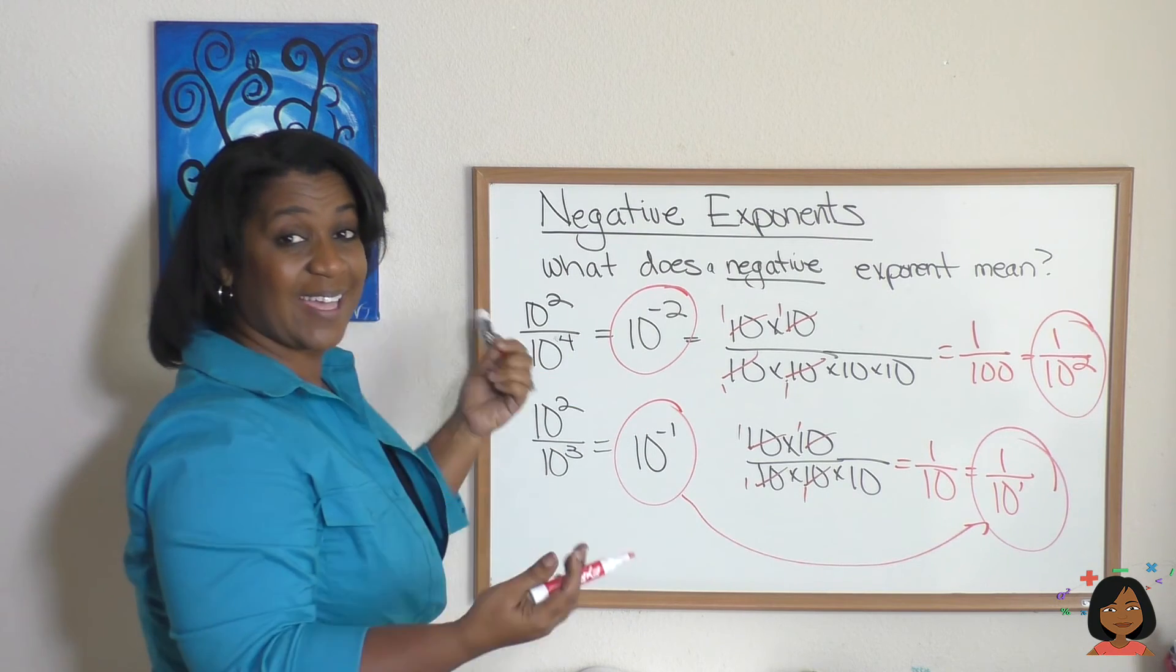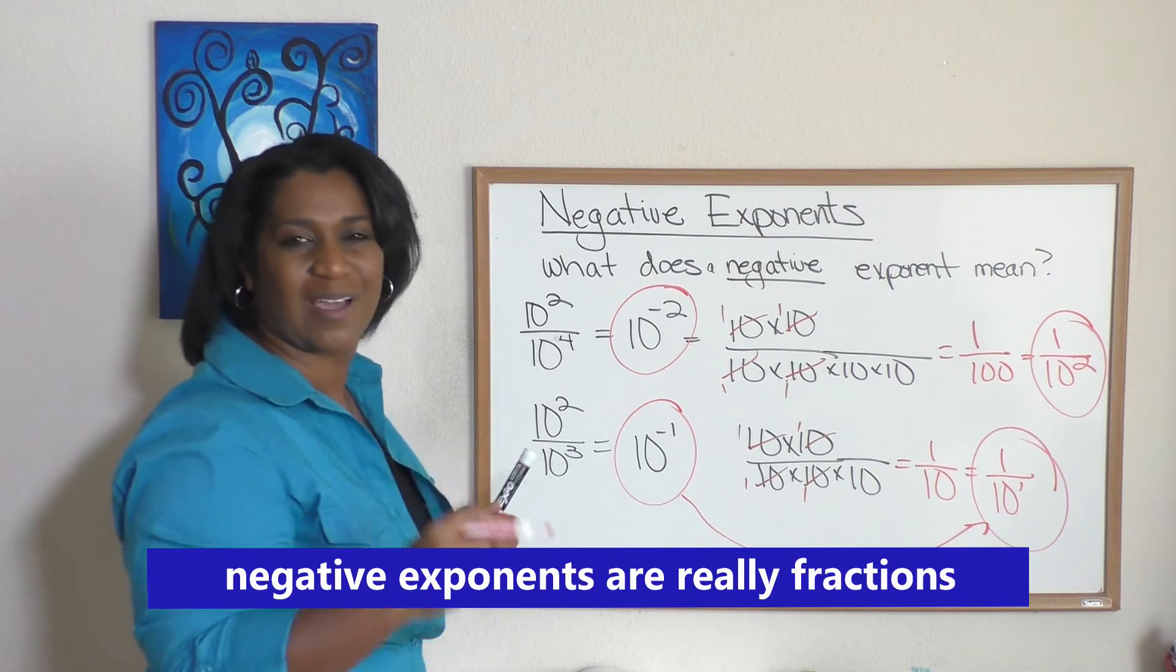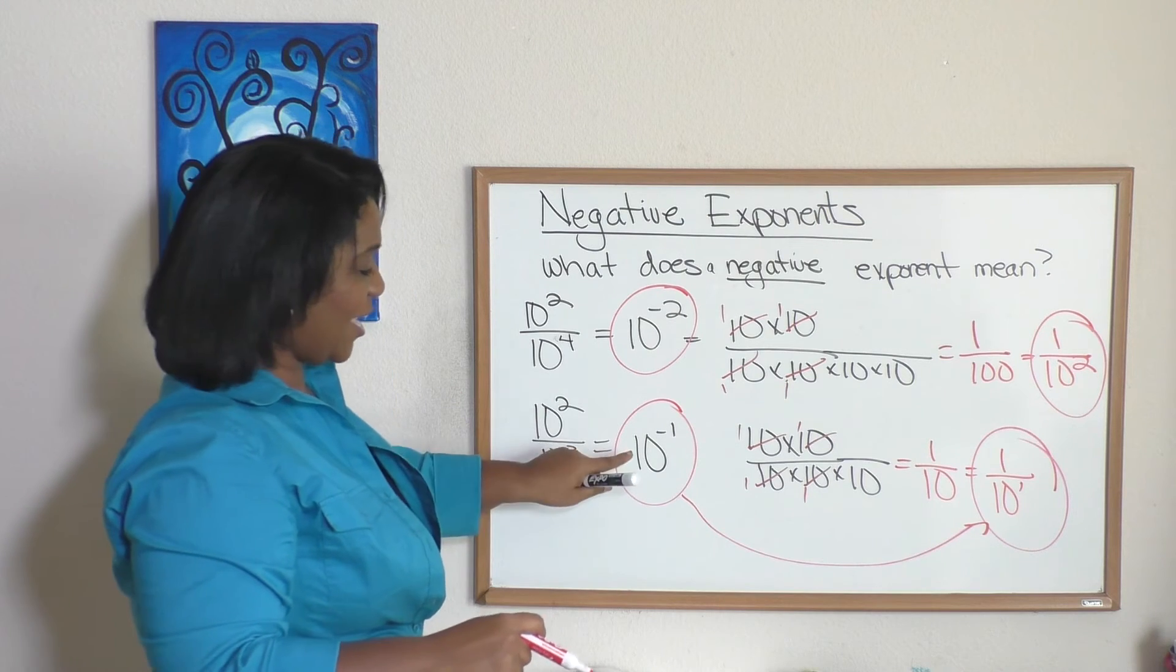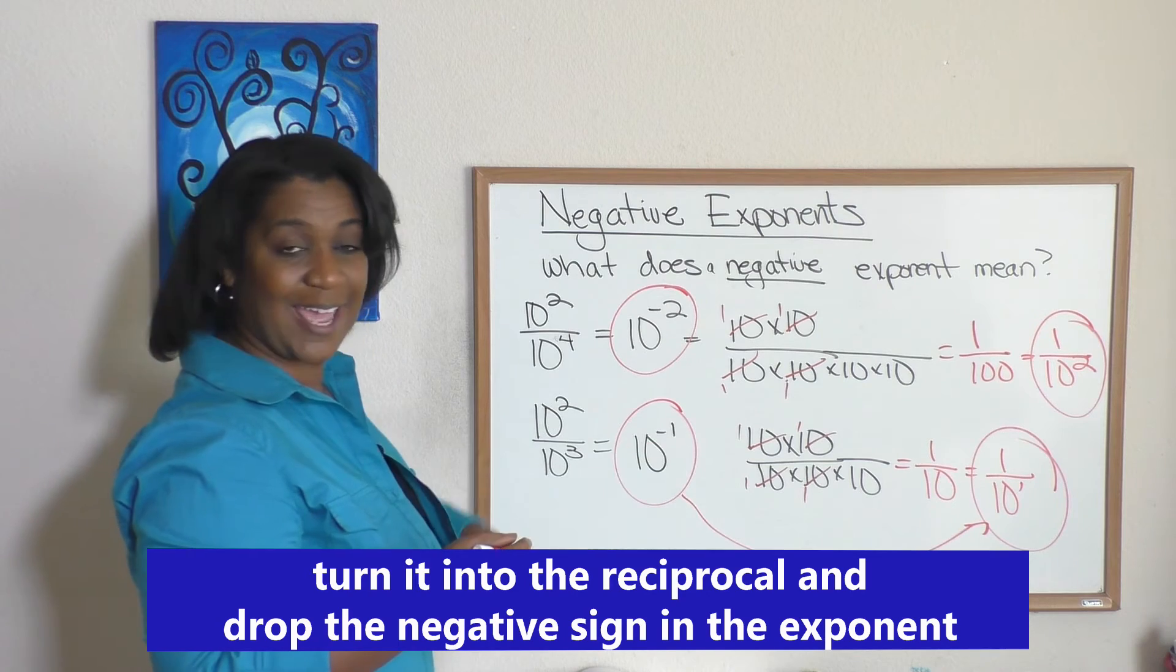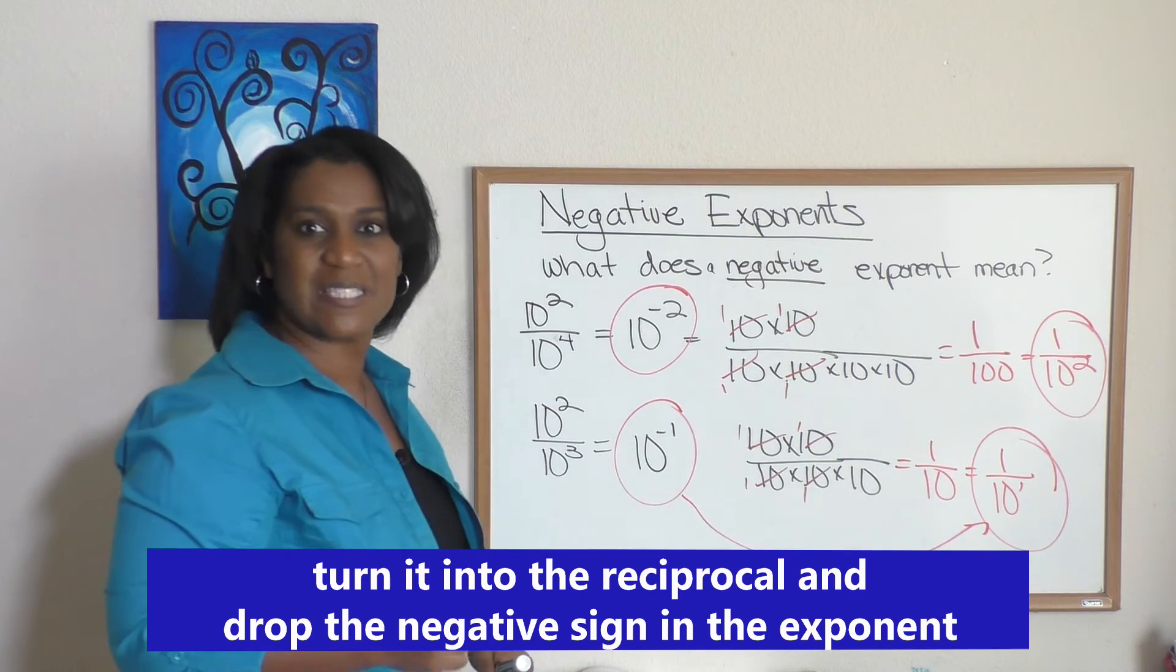So 10 to the negative 1 is the same thing as saying 1 over 10 to the 1st. Whenever we have a negative exponent, you have to think we're talking about a fraction. So you take it, make it the reciprocal, 1 over 10, and you take that exponent and it becomes positive when it's in the denominator.